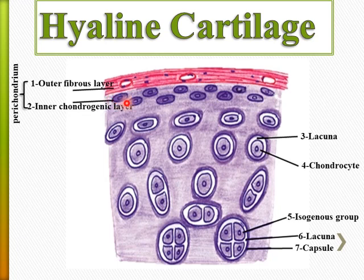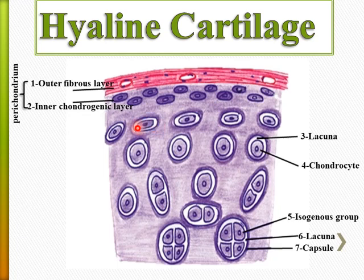The inner chondrogenic layer divides, giving rise to chondroblasts. The chondroblasts form the matrix and secrete collagen type two. When the chondrocyte is surrounded with the matrix, it condenses to form a capsule, and a lacuna appears. This lacuna is not present in real life — only in slides.